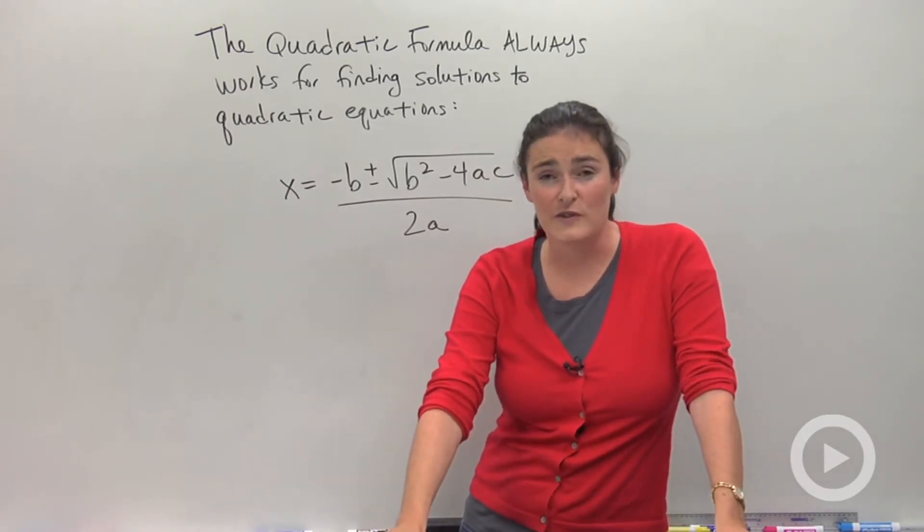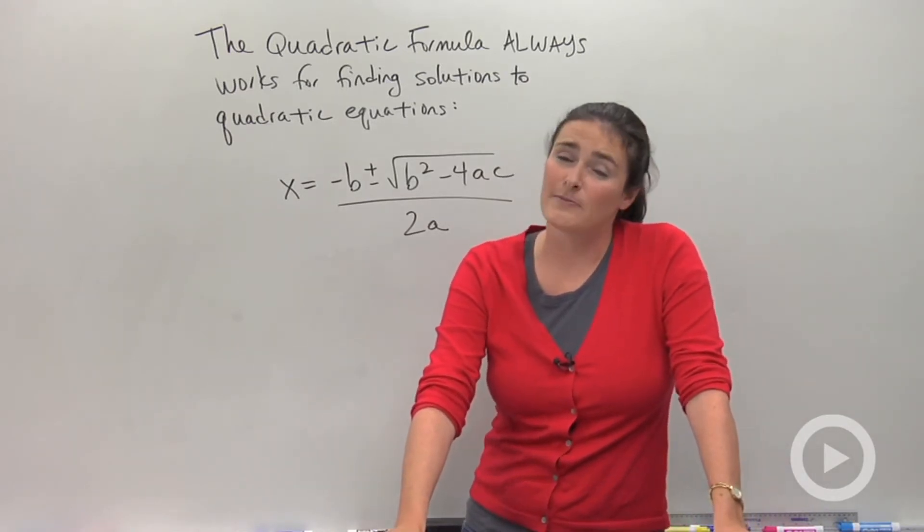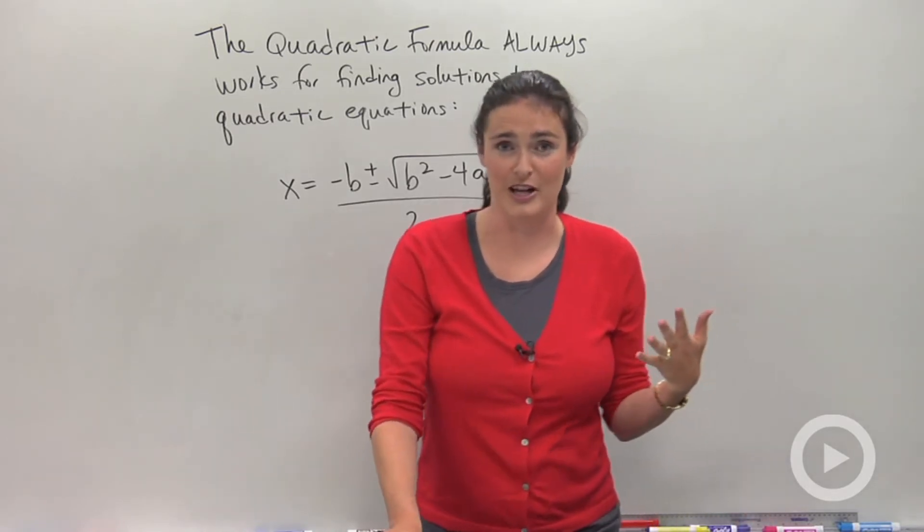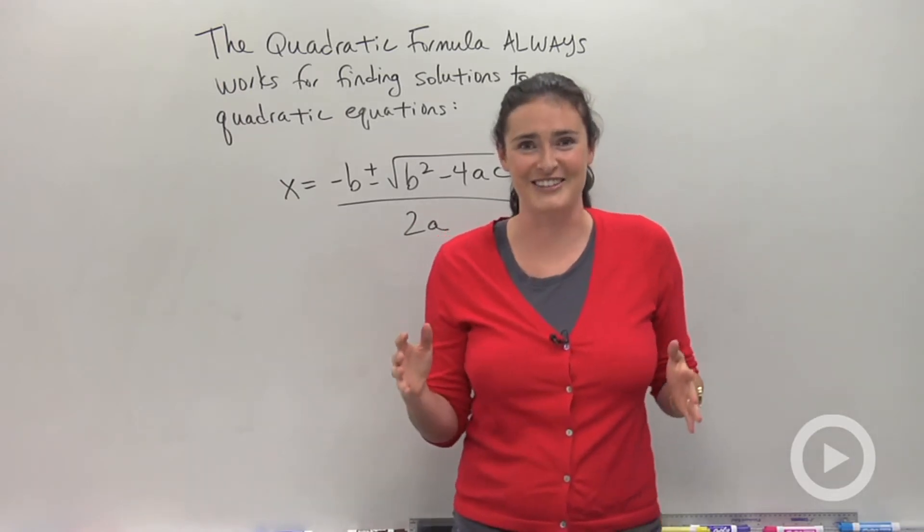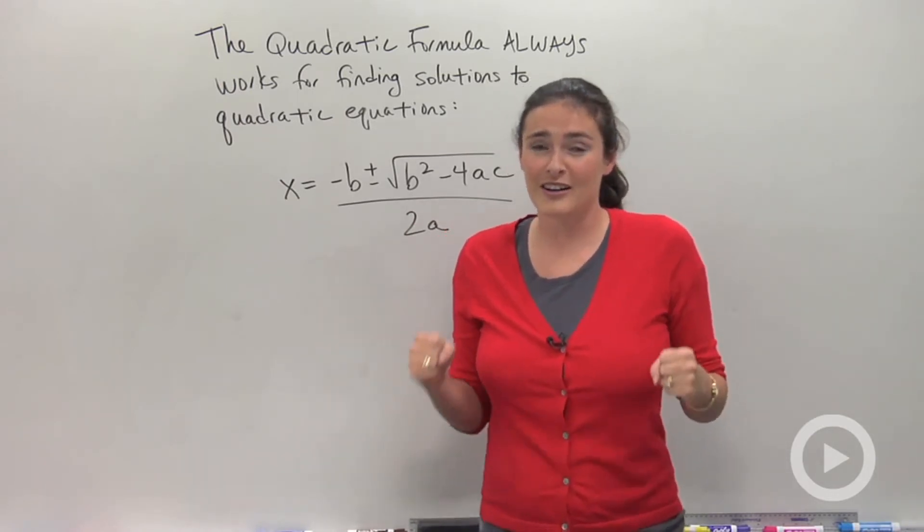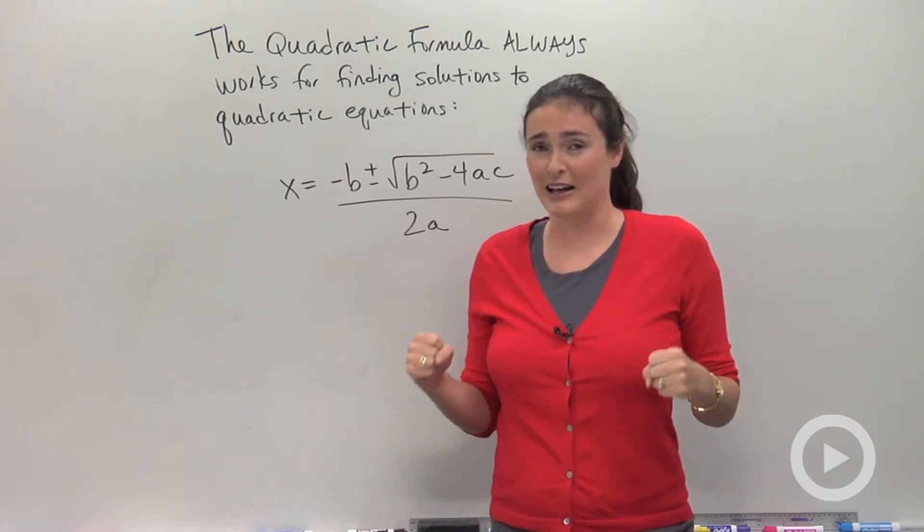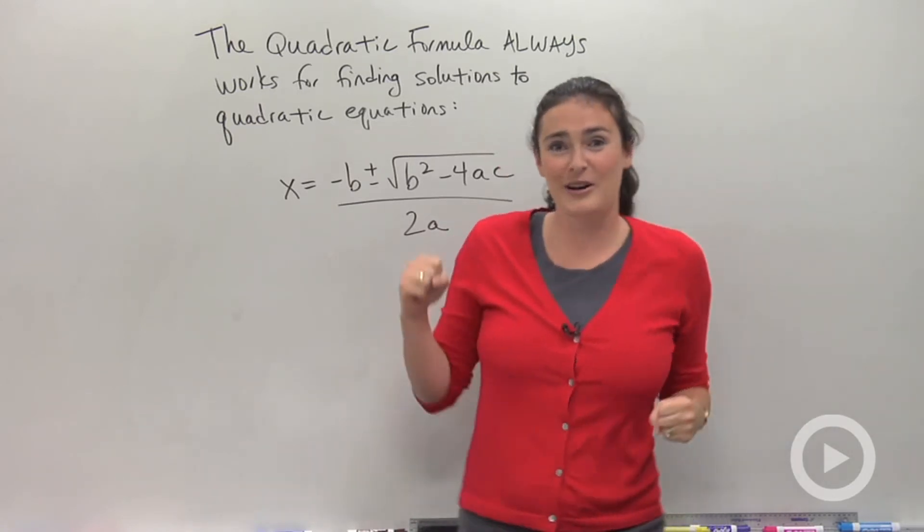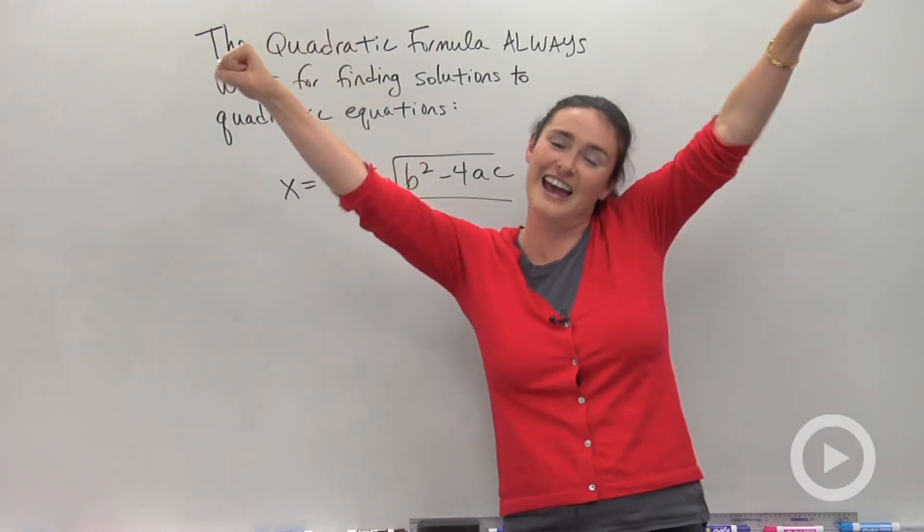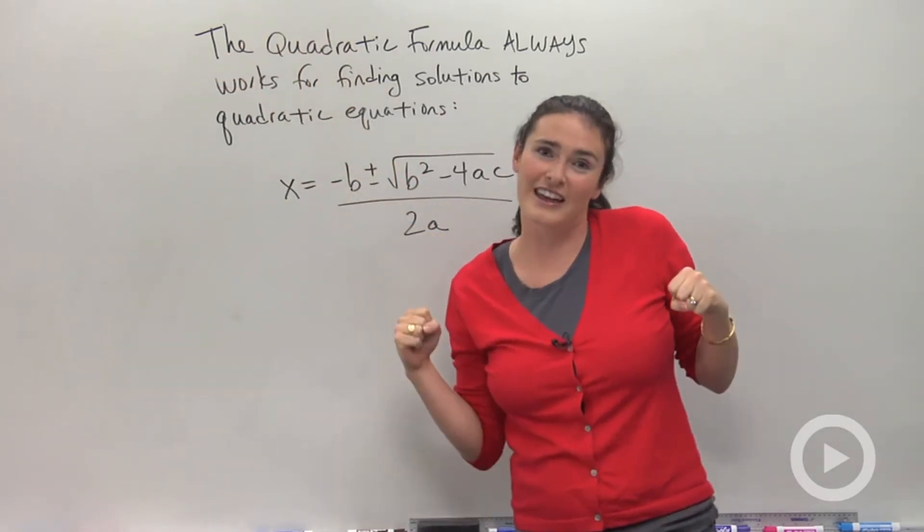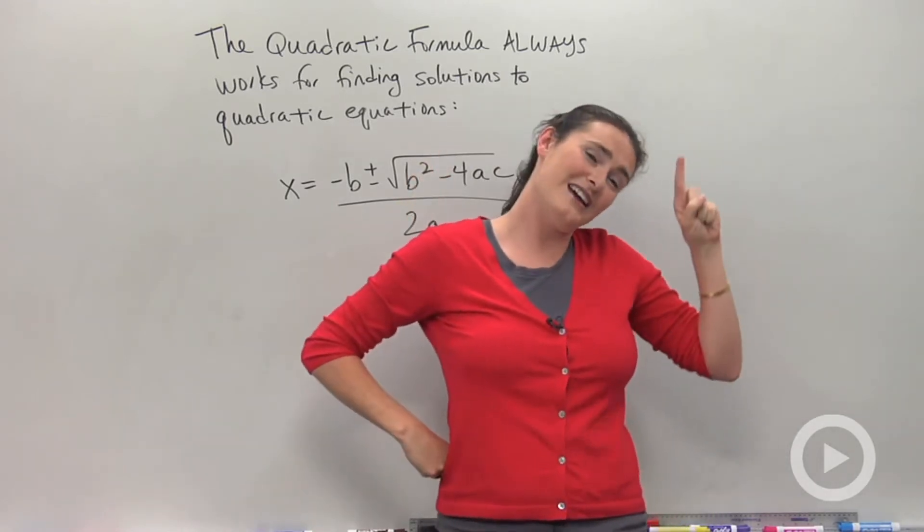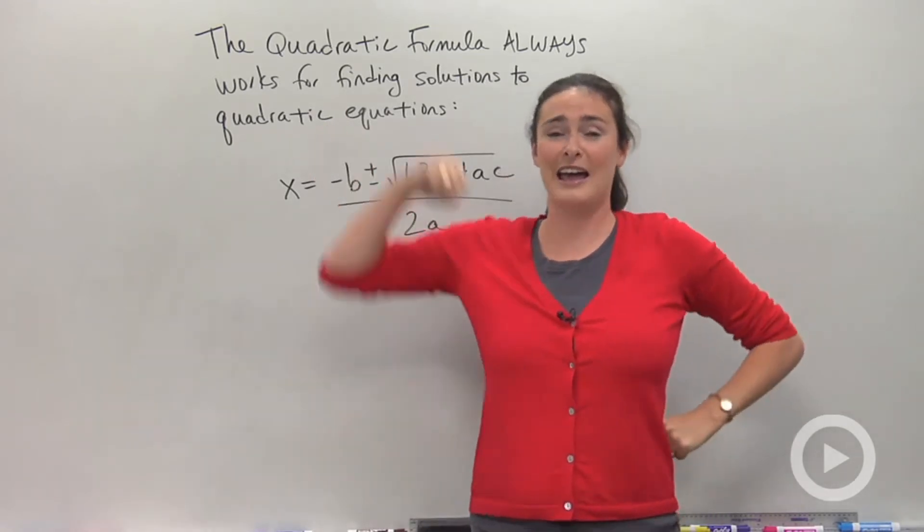Another way you could do this is Jingle Bells. So this works better seasonally. If you guys are learning this around the holiday season, you might want to choose the Jingle Bells option. Ready? I think I know this one. X equals negative b plus or minus square root of b squared minus 4ac all divided by 2a. X equals negative b plus or minus square root of b squared minus 4ac all divided by 2a. Hey!